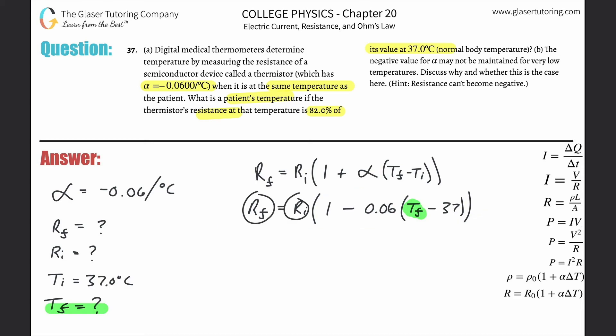In order for me to use this formula, I have to get rid of these R's somehow. Anytime they start talking about percentage changes, alarm bells go off. I've seen this 1400 times now, that I can simply probably relate these two to one another via the percentage, and then I'm going to be able to cancel that variable out. Let's go back and erase those question marks. It's telling us, what is the patient's temperature if the thermistor's resistance at that temperature, meaning the final temperature...